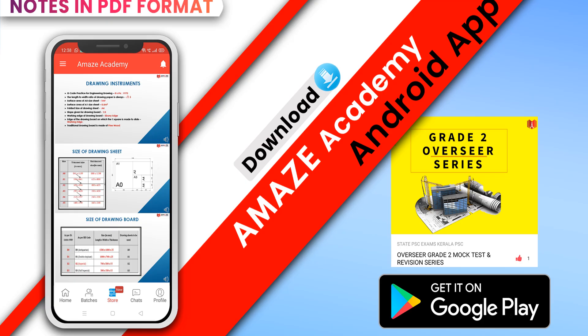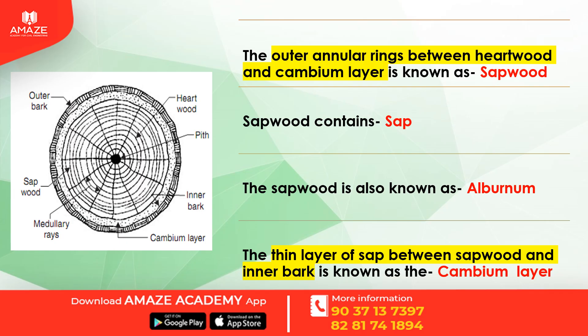Quick revision notes are available for overseer test series — you can download the Amaze Academy app in PDF format from the Google Play Store. The outer annular rings between the heartwood and the cambium layer is known as the sapwood.